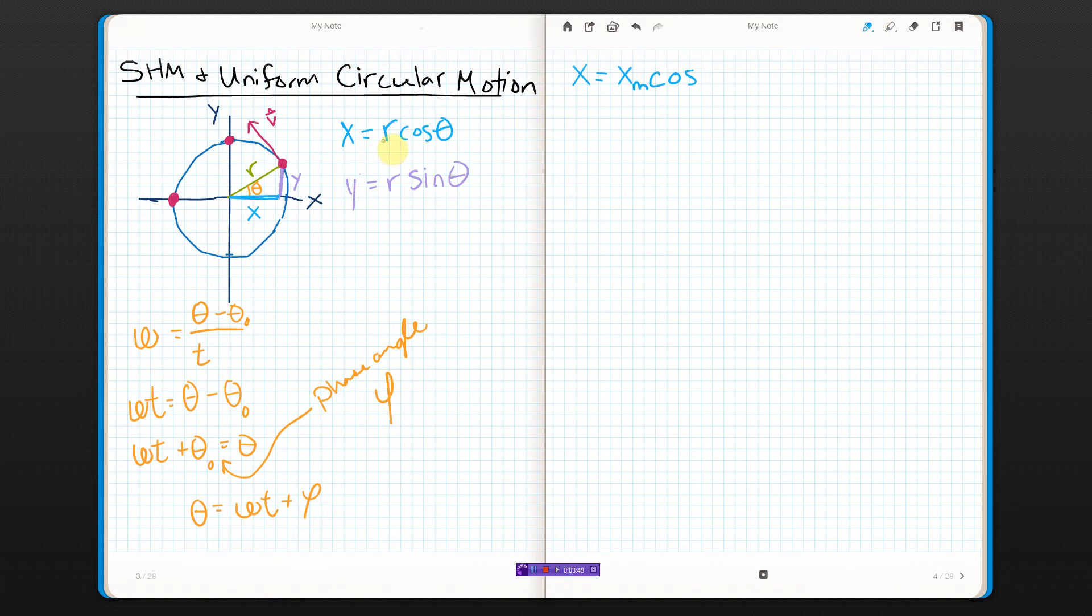So I can come back up here and say, well, if X is maximum times cosine of theta, where theta is omega T plus phi, then X is equal to Xm cosine omega T plus phi. That looks awfully familiar. If I do the same thing for Y, Y equals, this time, R is the maximum coordinate I can have for Y, so it would be Y max, but it's sine. Theta is omega T plus phi again. That looks awfully familiar, too. This looks a lot like simple harmonic motion.